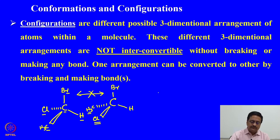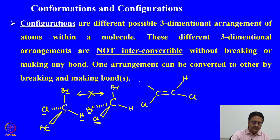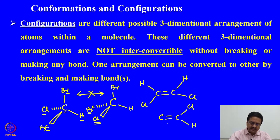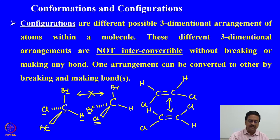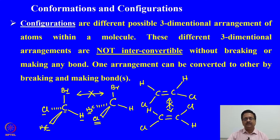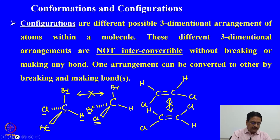Another type of configuration can be seen in geometrical isomers, where we have the cis and trans isomers. The trans compound looks like this, where the two chlorine atoms are on opposite sides of the double bond and the two hydrogens are also opposite. These two different orientations are two different configurations of the same molecule, and they are not interconvertible without breaking or making a bond. Conformations are interconvertible without making or breaking a bond, whereas configurations are not.